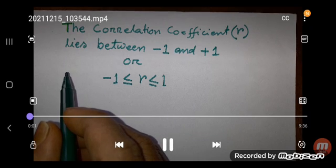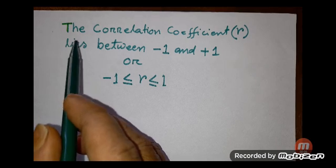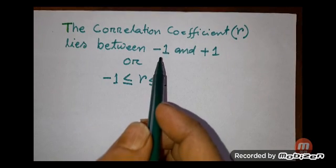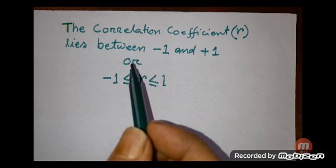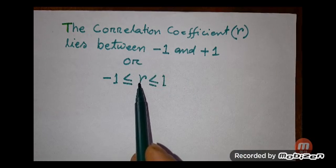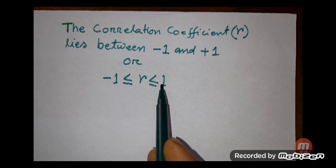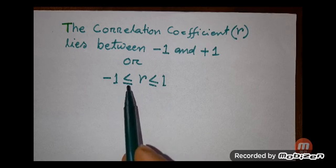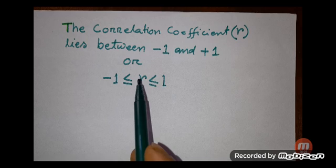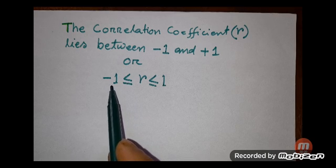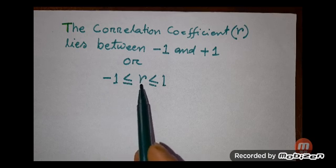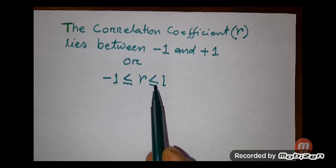One of the properties of correlation coefficients is that the correlation coefficient r lies between minus 1 and plus 1, or equivalently, r is greater than or equal to minus 1 and less than or equal to plus 1.